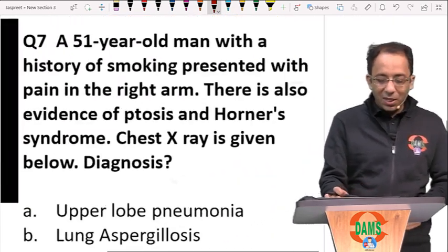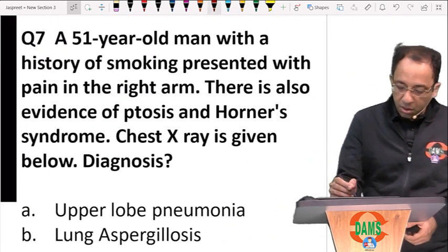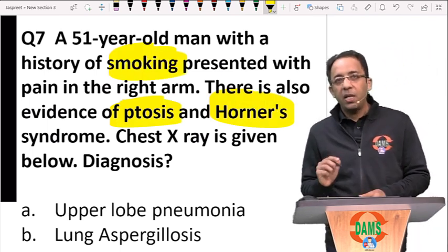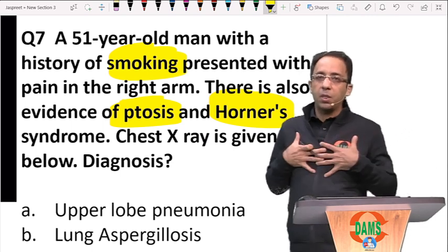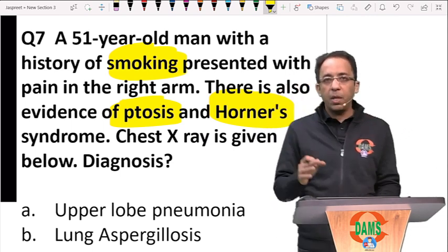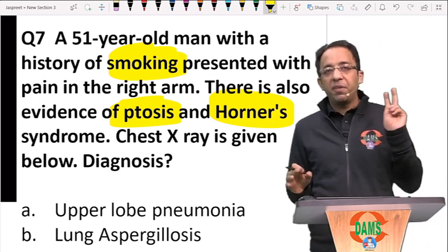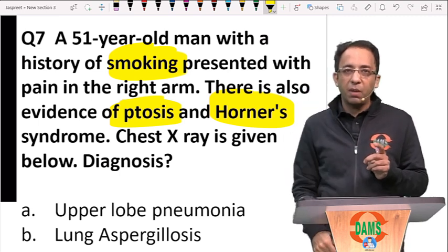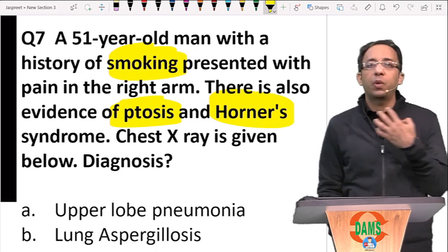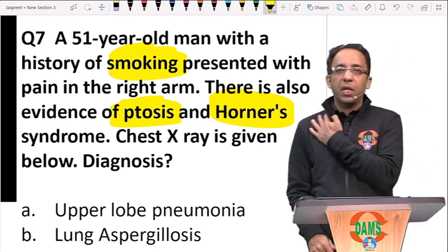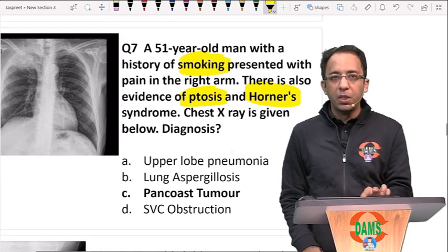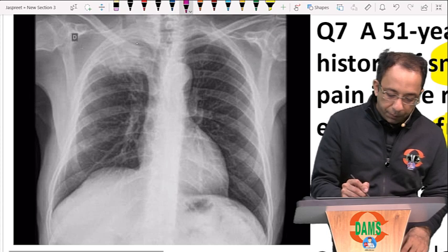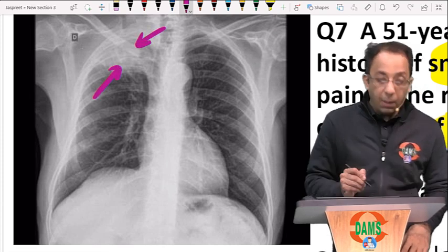Second question: the patient has ptosis, Horner syndrome, and is a smoker. When I see a chest image with ptosis, I think of two things: an anterior mediastinal mass with ptosis suggests myasthenia gravis and thymoma; an apical mass with ptosis and Horner syndrome suggests brachial plexus involvement due to a Pancoast tumor, also called superior sulcus tumor. On the X-ray I can see an apical lung mass.